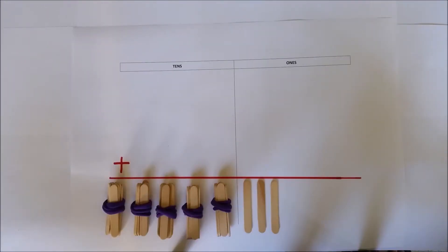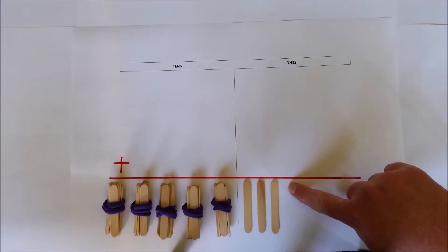So 36 add 17 and the answer is 53. Five tens and three ones.